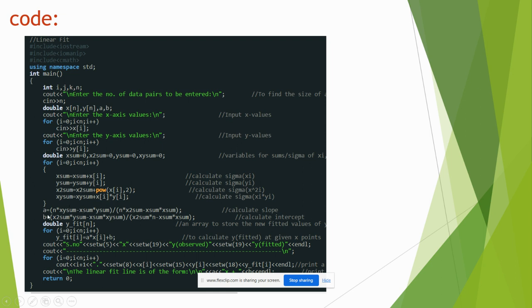By using this, we have to find A and B. A represents slope, B represents intercept. By using this, we have to find a fit line. This is a linear regression line, Y equals AX plus B.